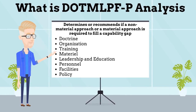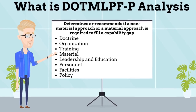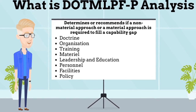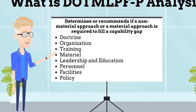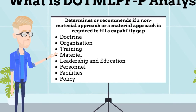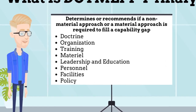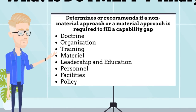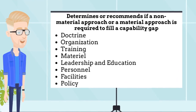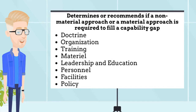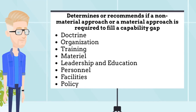What is DOTP Analysis? DOTP Analysis stands for Doctrine, Organization, Training, Materiel, Leadership and Education, Personnel, Facilities, and Policy. DOTP Analysis is the first step in the requirements process and part of a functional solutions analysis.